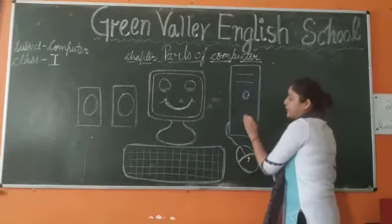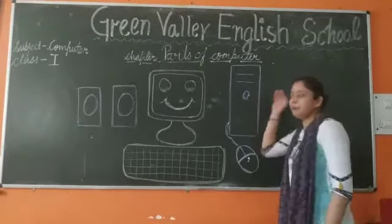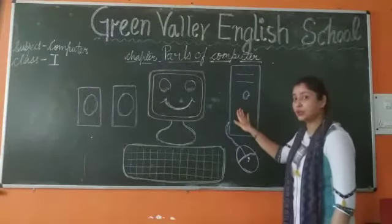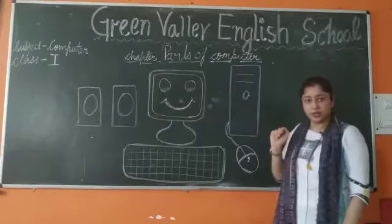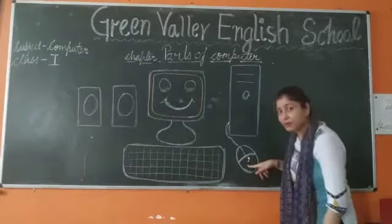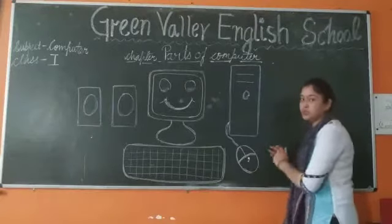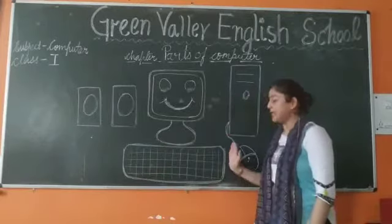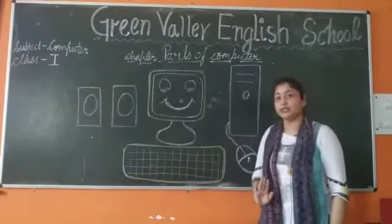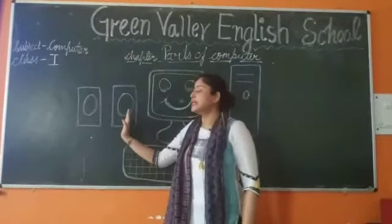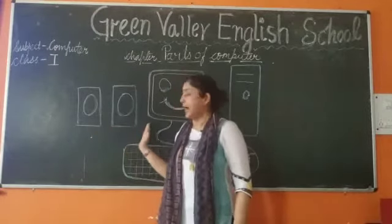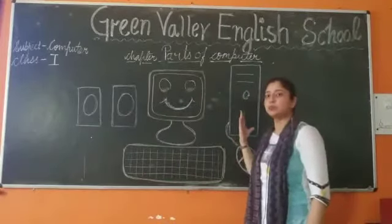Next, what is this? This is a CPU. CPU is known as the brain of the computer. Then we have this little mouse — this is not the real mouse, but this is called the mouse. And then we have this big board like a piano, called the keyboard. And then we have the speaker, which makes the volume more clear.